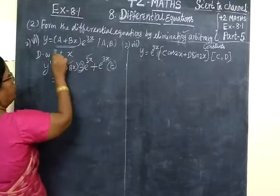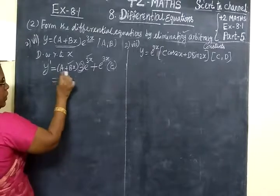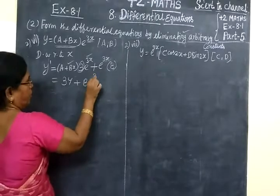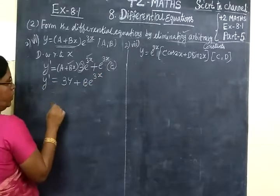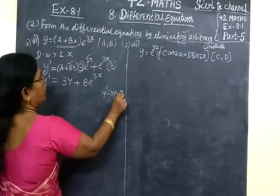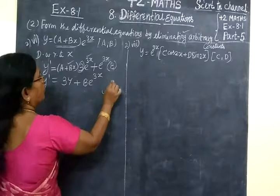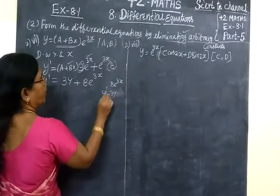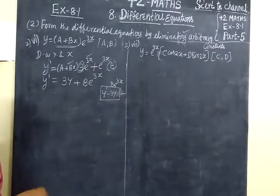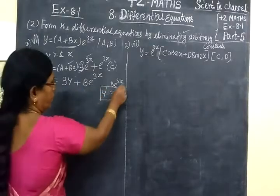We can substitute y. We substitute v·e^(3x) — this is the value. This gives y' minus 3y. We keep this ready; in the next step we will apply this. Plus 3y minus 3y — v·e^(3x) is not the value of this directly.